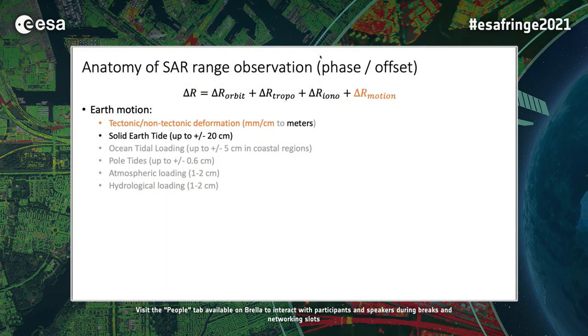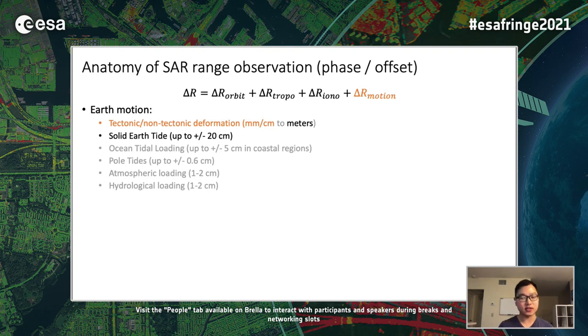SAR data can measure the relative distance change in the line-of-sight direction between the radar antenna and the ground surface using either the phase information through interferometry or InSAR, or using the offset information through pixel tracking technique. For either of them, the range of observations includes these two components.